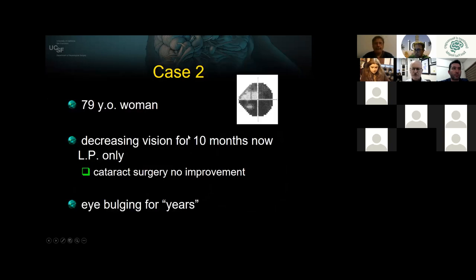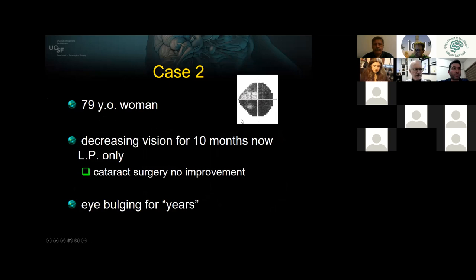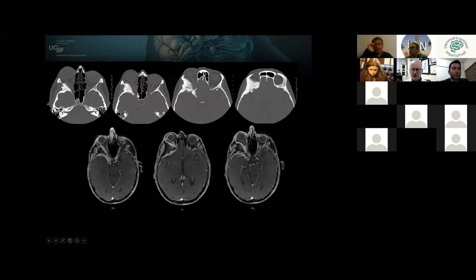Here's a different patient — a 79-year-old woman, older than typical, with a long-standing history of decreasing vision and a bulging eye for years. You can see the Humphrey visual field of the right eye, where she has a compressive neuropathic defect for many years of long-standing orbital apex compression.